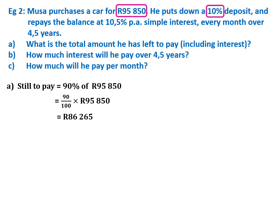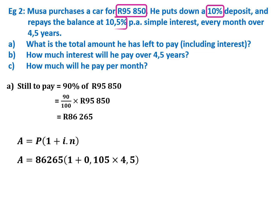Question A: what is the total amount he has left to pay, including interest? Using the simple interest formula, the principal is 86,265 rand, the interest rate is 10.5% — substituted as 0.105 — and the time is 4.5 years. Typing it into the calculator gives a total of 127,025 rand and 21 cents.